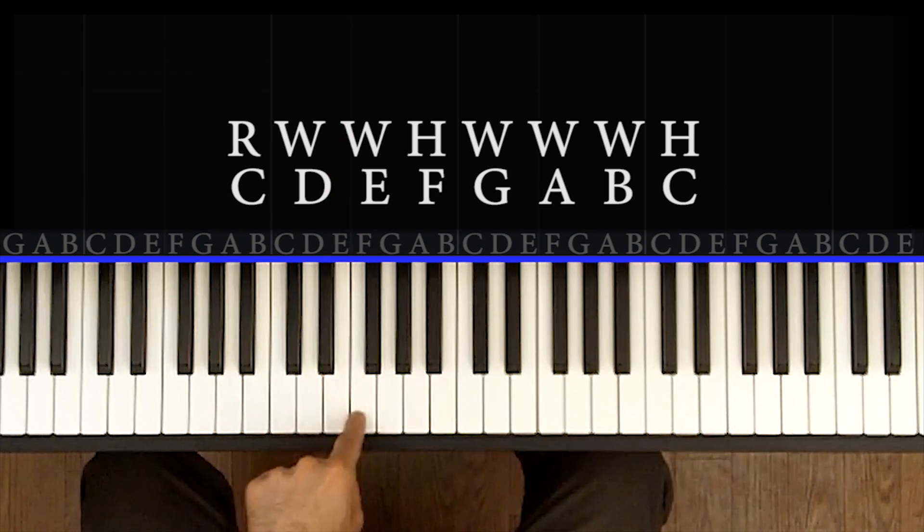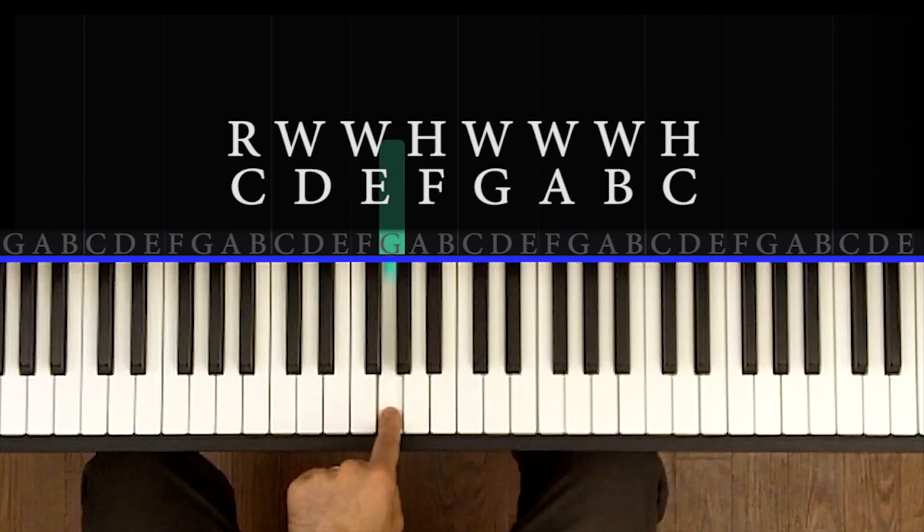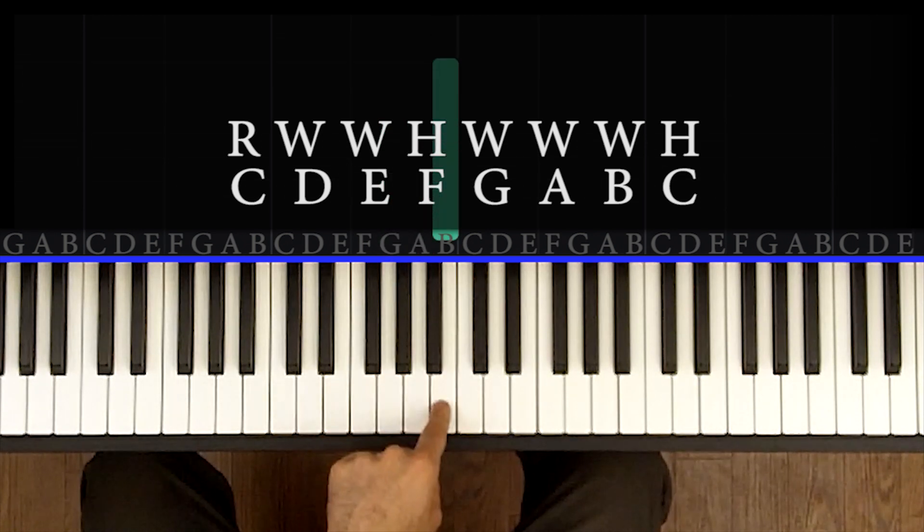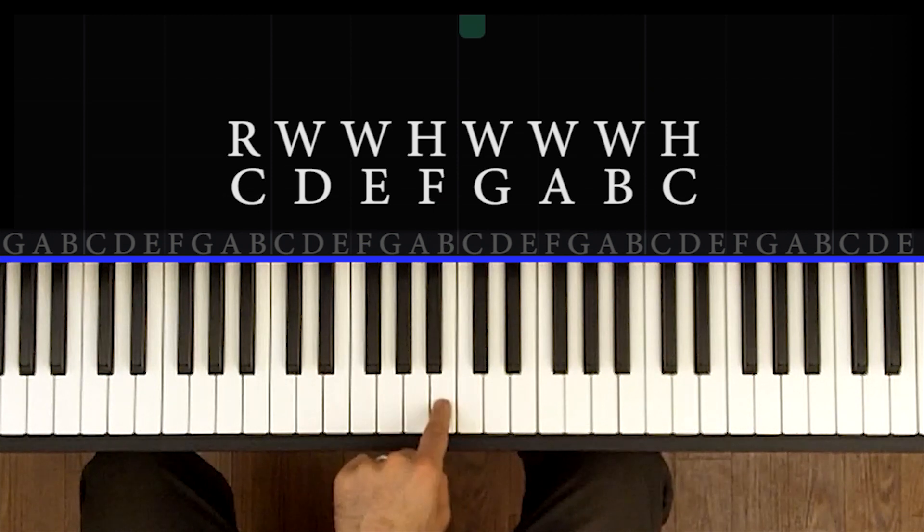Then we go a half step because you see from E to F, it's just one little jump. Half step, then we've got a whole step because two little jumps, whole to G, whole to A, whole to B, and then another half step to finish off at C.